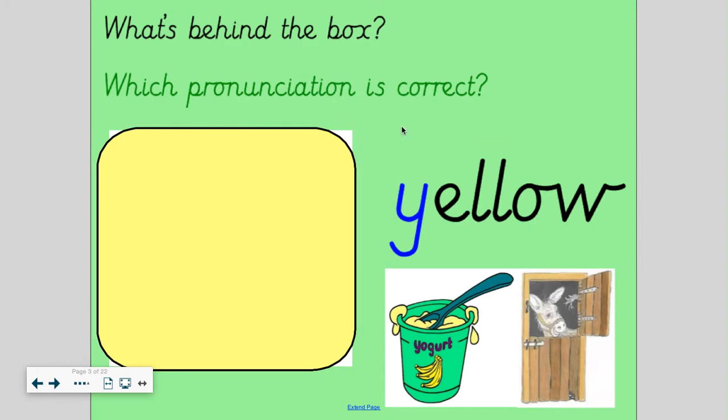Now we need to have a look at the word on the screen. Sound talking it using both pronunciations to guess what is underneath the box. Let's start with the yu sound first. Can you get those sound talking hands ready? Fantastic. Off we go together. Y-e-l-l-o-w. Yellow.